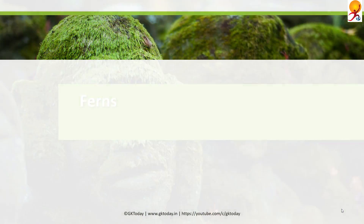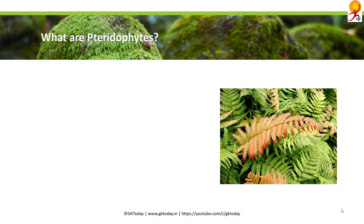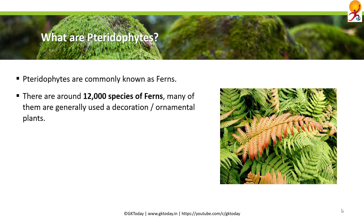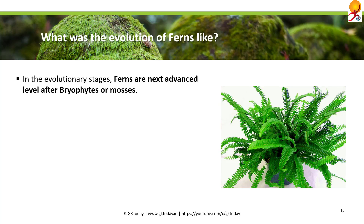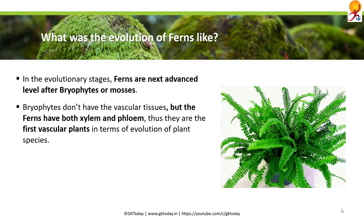Now we come to ferns. What are pteridophytes? Pteridophytes are commonly known as ferns, and there are around 12,000 species of ferns, many used for decoration or as ornamental plants. In evolutionary stages, ferns come after bryophytes and are more advanced than mosses. Bryophytes lack vascular tissues, but ferns have both xylem and phloem, making them the first vascular plants in terms of plant evolution. They have stems, leaves, and roots like other vascular plants.